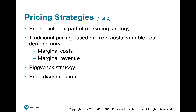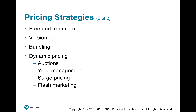Pricing strategies — an integral part of marketing strategy. Traditional pricing is based on fixed costs, variable costs, and demand curve, with marginal costs and marginal revenue. You've got a piggyback strategy, which is figuring out what your competitors are doing and matching their price point. There's also price discrimination, free and freemium models where you offer a free initial product to get somebody interested, versioning like Pepsi offering Diet Pepsi and other variants, bundling like AT&T and DirecTV, and dynamic pricing such as auctions, yield management, surge pricing, and flash marketing.